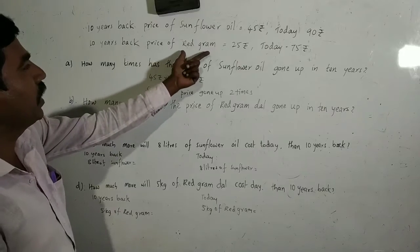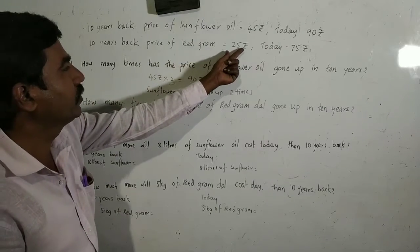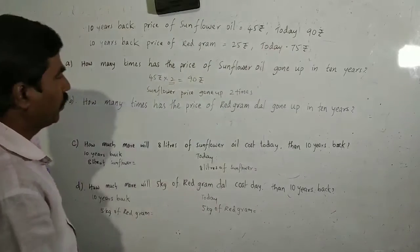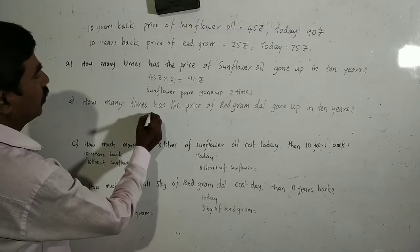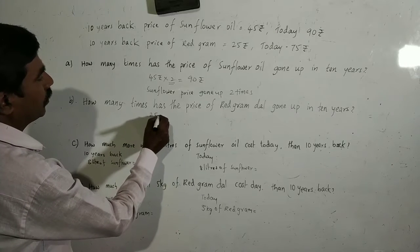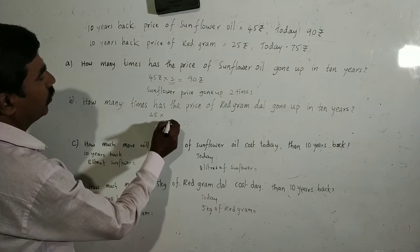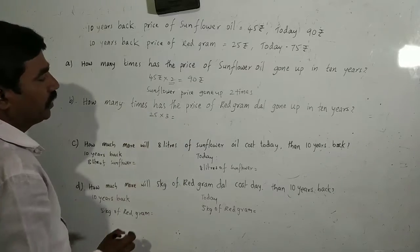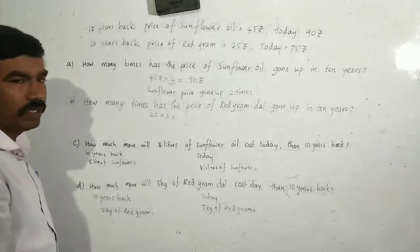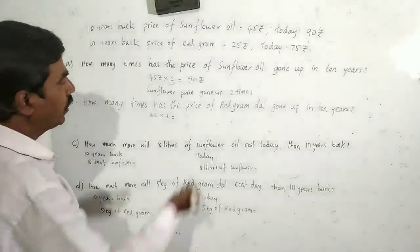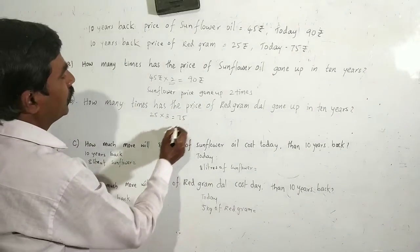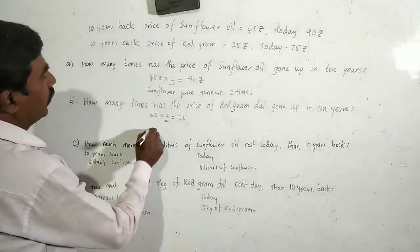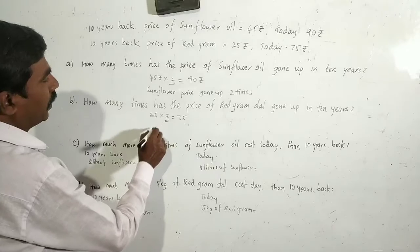Red gram — you see, red gram is Rs. 25, today is Rs. 75. So, 25 into 3: 25 is Rs. 25, 25 times 2 is Rs. 50, 25 times 3 is Rs. 75. So, how many times has it risen? 3 times.